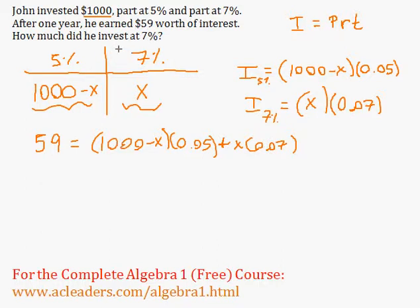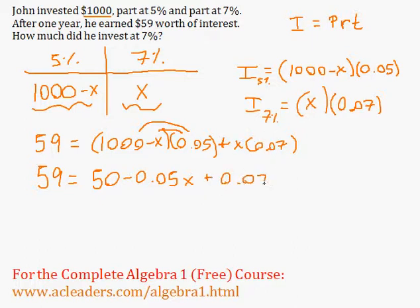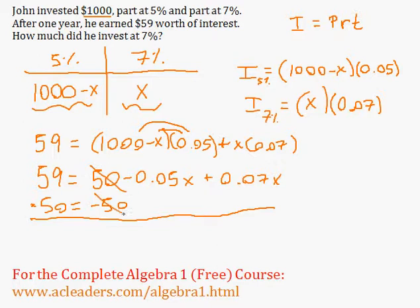And we find out how much invested at 7%. So 59 is equal to, now we need to distribute the 0.05. 1,000 times 0.05 is 50. So negative X times 0.05 is negative 0.05X plus X times 0.07 is 0.07X. And now I will just subtract 50 from both sides of the equation because I want to eventually isolate X. So these guys go away. 59 minus 50 is just 9. And negative 0.05X plus 0.07X is just 0.02X.